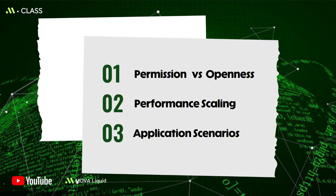Second, performance, scaling, and governance. Public chains must balance decentralization and security, which naturally limits throughput and latency. Private chains can rely on more centralized governance and hardware strategies to increase throughput, trading some decentralization for higher efficiency.